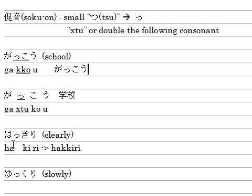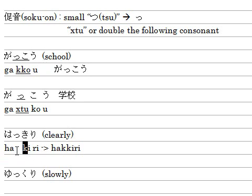Let's try another example: はっきり, which means 'clearly.' は is H-A, and き is K-I, and り is R-I. So you double the following consonant: H-A, K-K-I, R-I.